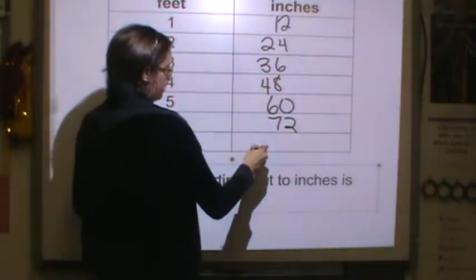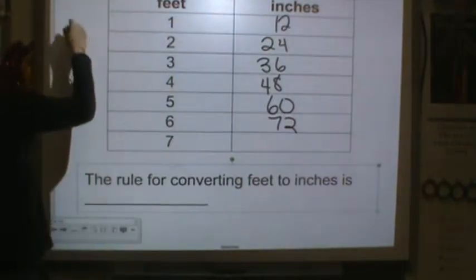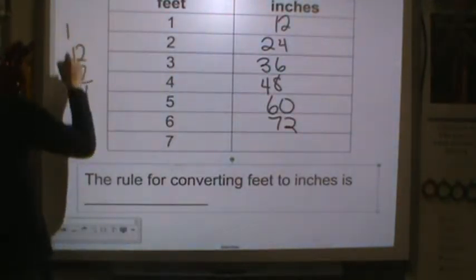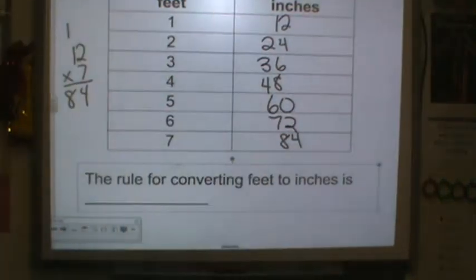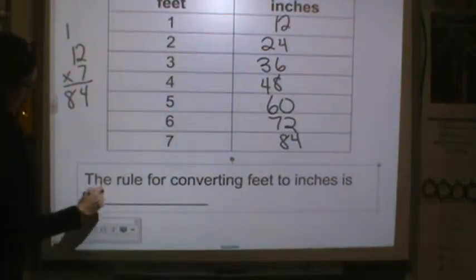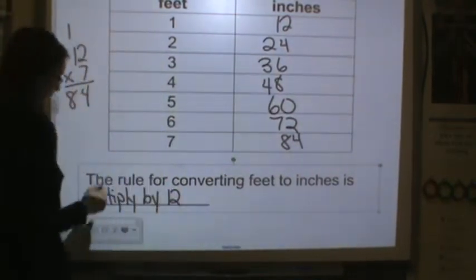Seven feet equals, oh I don't know seven times 12 off the top of my head. Seven times two is 14, seven, eight, 84 inches. So the rule for converting feet to inches is multiply by 12, right?